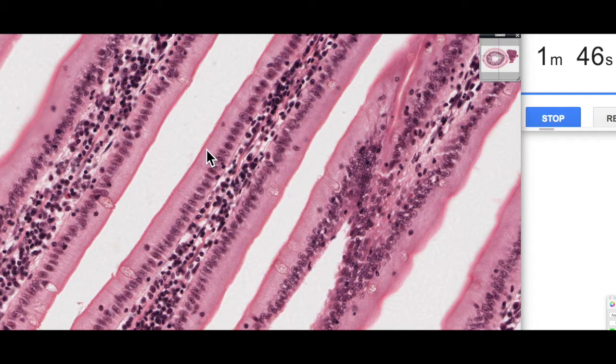Whereas the cytoplasm you can see is very pink, very acidophilic or eosinophilic, so there's lots of protein there. What protein is staining inside the cytoplasm? It's largely going to be the cytoskeletal protein: the microtubules, the intermediate filaments, and the microfilaments.